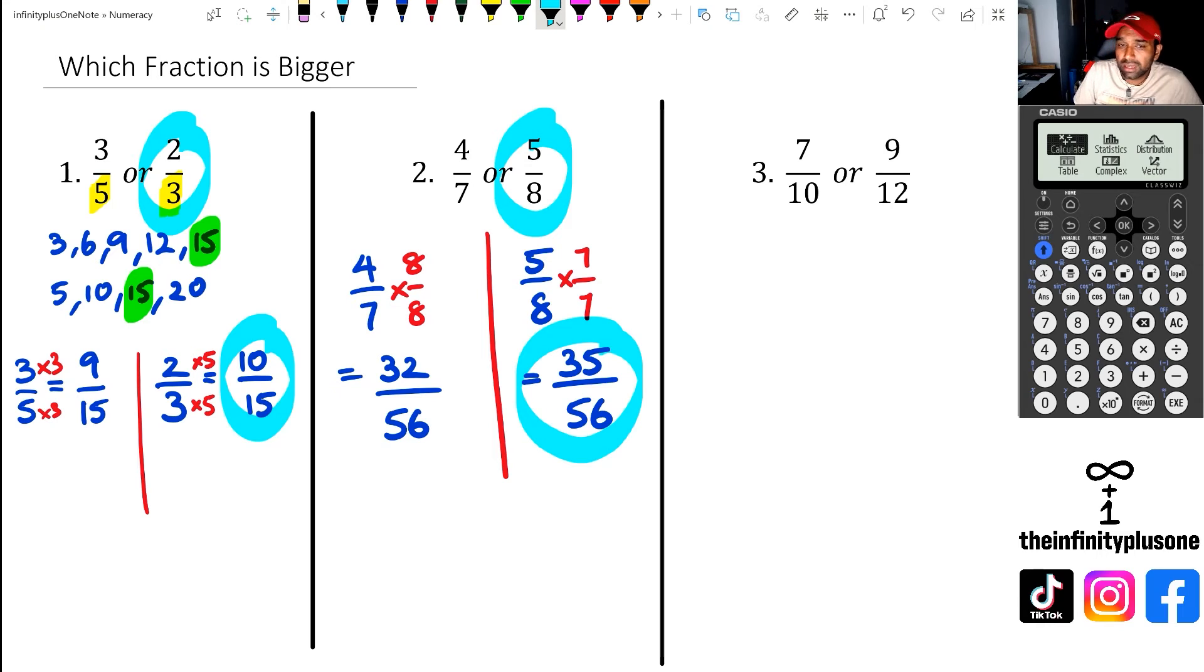Now looking at the last one, you might be thinking, yes, I can actually do the whole multiply 10 with 12 and multiply 12 with 10. But I also know the lowest common multiple between 10 and 12 is actually 60. By the way, if you do have this particular calculator, what you can do is click on the home button and click on the calculate menu.